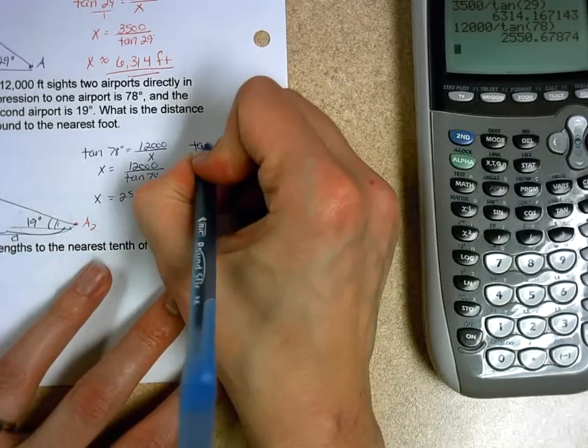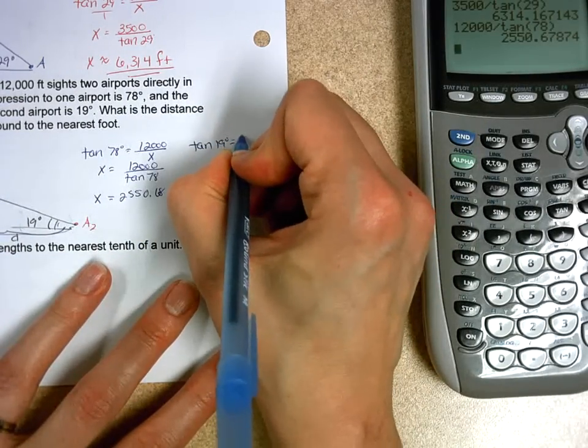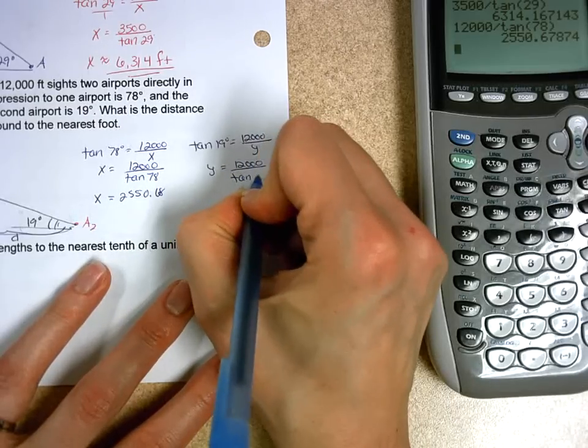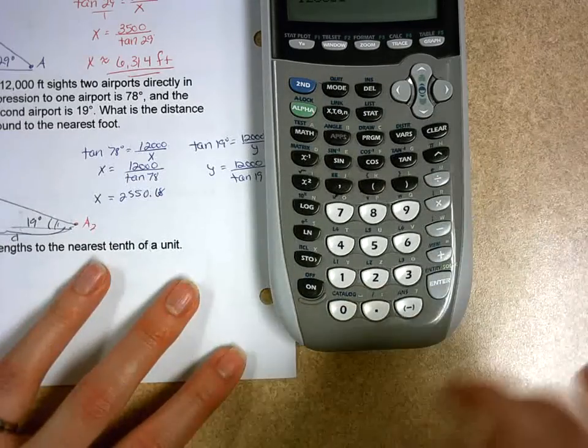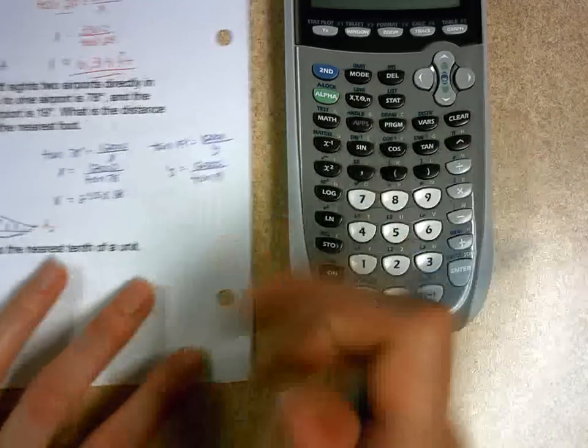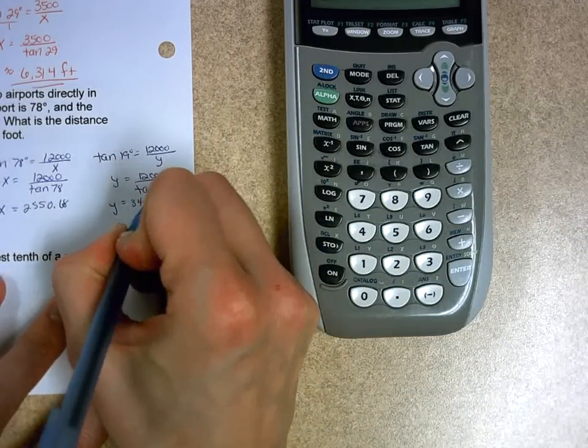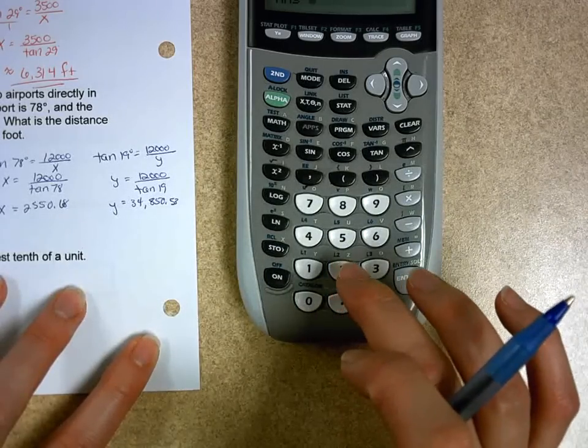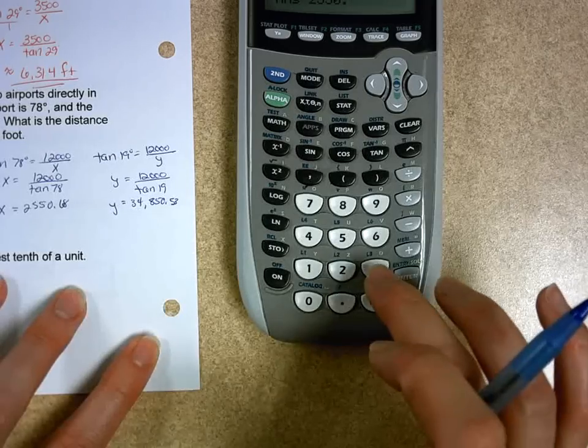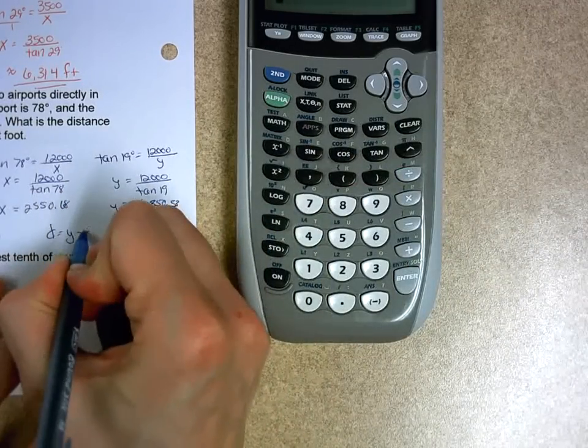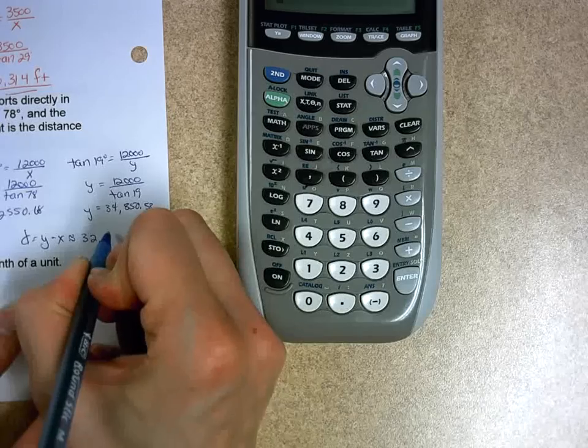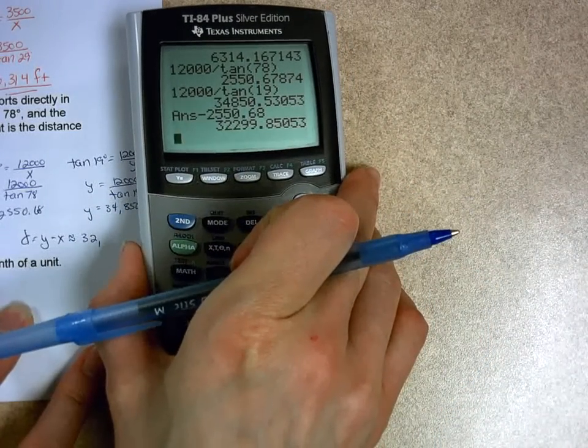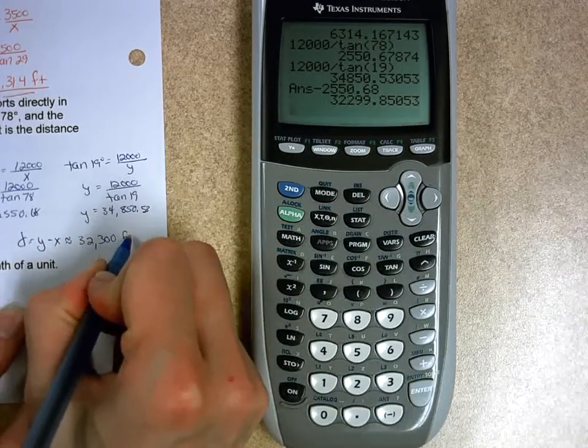Then we do the same thing for this angle. We're going to call it y. The tangent of 19 degrees is still 12,000 feet over y, then I flip-flop them. It better be longer because it's further away. So 12,000 divided by the tangent of 19, that one is basically 34,850.53. We're going to subtract what we had earlier, which is 2,550.68. We get approximately the distance, which is the difference of the two, y minus x, is 32,300 feet to the nearest foot.